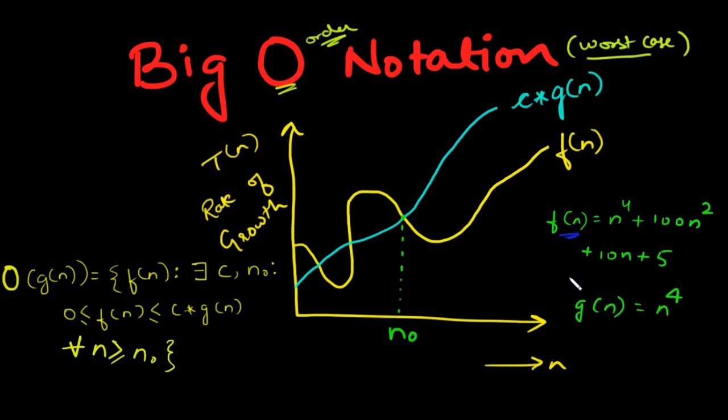So here, the function which we are interested to analyze is drawn using this yellow line. This is our algorithm which we want to analyze.